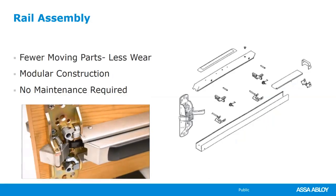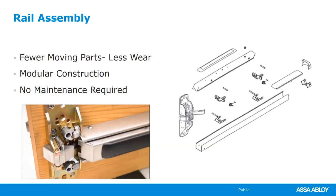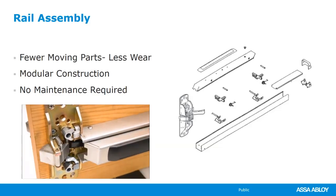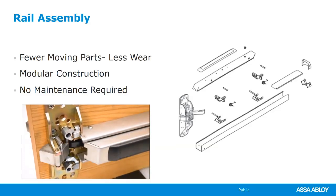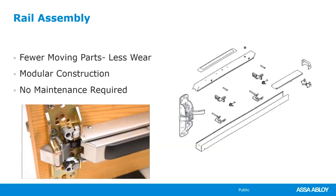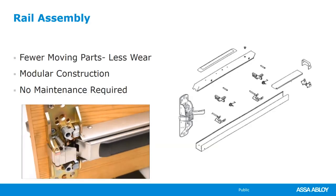Looking at the rail assembly: Sargent's exit device has very few moving parts inside and is very modular in construction. In a rim device application, pushing the rail hits a lever and retracts the latch — it could not be any simpler. Screws behind the push rail at the head allow you to install just the operating head during construction and then add the rail closer to the end of the construction phase, saving wear and tear on the finish. No maintenance is required to maintain the five-year warranty.